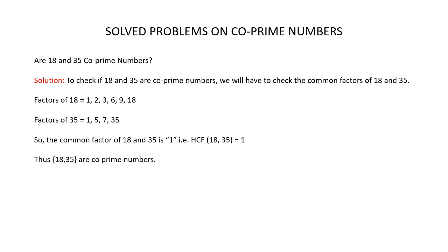Let's solve some problems. Are 18 and 35 co-prime numbers? To check, find their common factors. The factors of 18 are 1, 2, 3, 6, 9, and 18. The factors of 35 are 1, 5, 7, and 35. The only common factor is 1, so the HCF of 18 and 35 is 1. Since the HCF is 1, the numbers 18 and 35 are co-prime numbers.